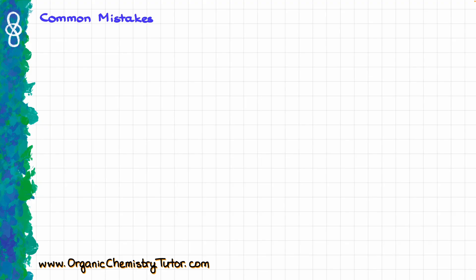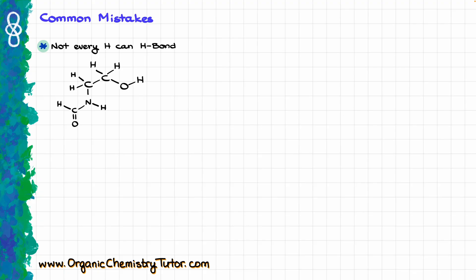Before I wrap up, I want to talk about common mistakes students make with hydrogen bonding. Probably the most frequent error is applying hydrogen bonding to any hydrogen they see. Remember, just because a molecule has a hydrogen somewhere doesn't mean it automatically participates in hydrogen bonding. Many hydrogens are connected to carbon, not to nitrogen or oxygen, and because of that they cannot participate in hydrogen bonding.